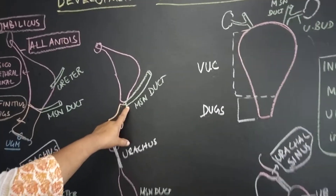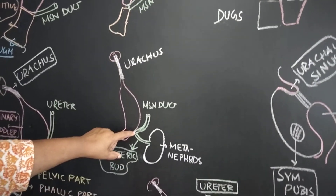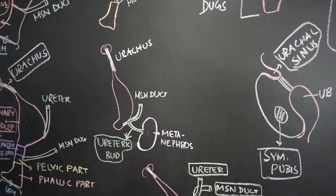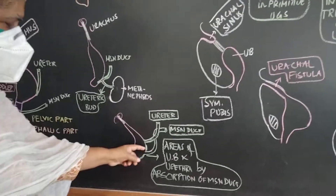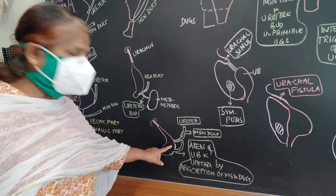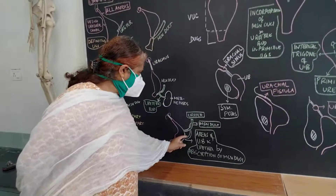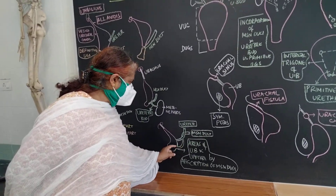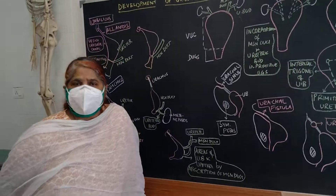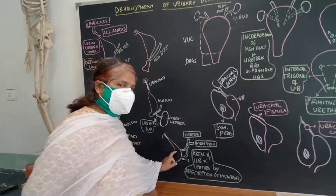Now, at this junction the mesonephric duct opens. This mesonephric duct is divided — the ureter originates and goes to the metanephros — and this is how the relation between the mesonephric duct and the ureter takes place. A part of the posterior wall of the urinary bladder is formed by the absorption of the mesonephric duct. So the mesonephric duct is absorbed, forming part of the posterior wall of the urinary bladder and primitive urethra. This is very important.